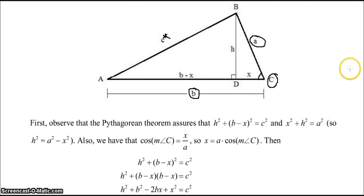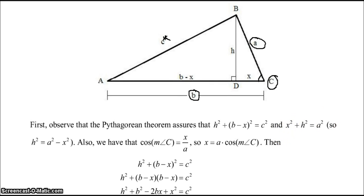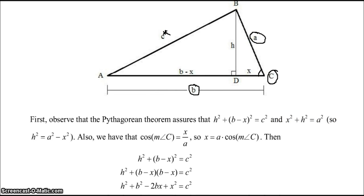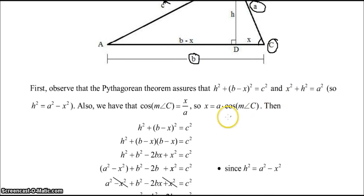First observe that the Pythagorean theorem assures that H squared plus B minus X squared equals C squared, and also X squared plus H squared equals A squared. So H squared equals A squared minus X squared. Also, we have the cosine of the measure of angle C is X over A. So X is A cosine of the measure of angle C.